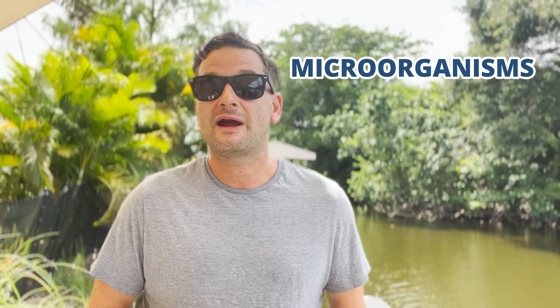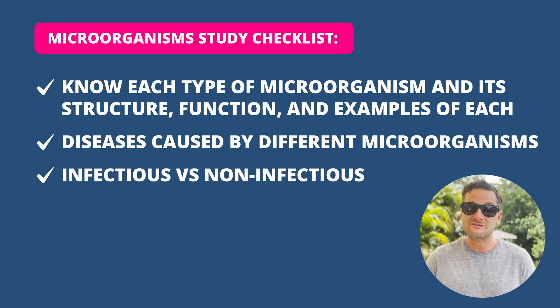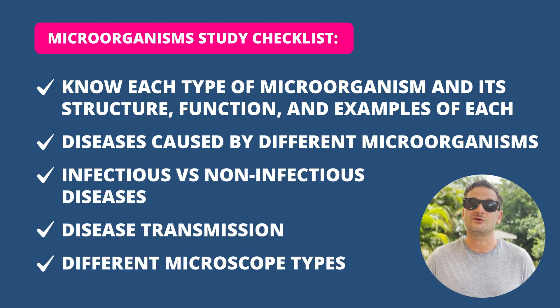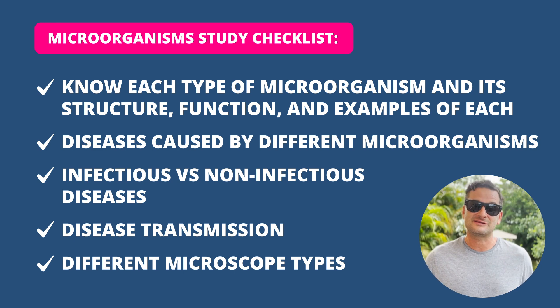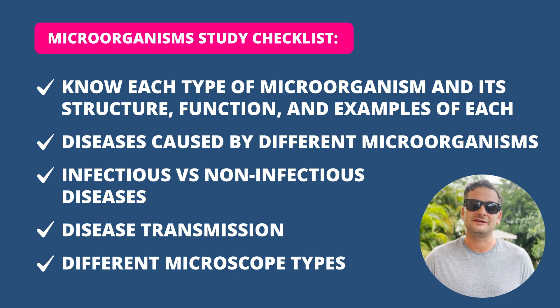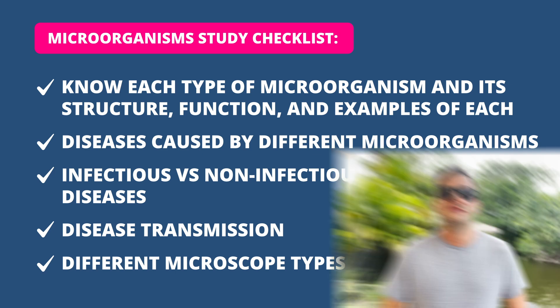Study the two different metabolic pathways and what happens in each, and understand how cellular respiration connects to metabolism and overall homeostasis. For microorganisms, you need to know each type — specifically their cell structure, unique characteristics, how they reproduce, what kinds of diseases they cause, and examples of each. Knowing the common infectious and non-infectious diseases is also important.